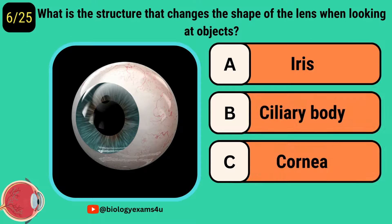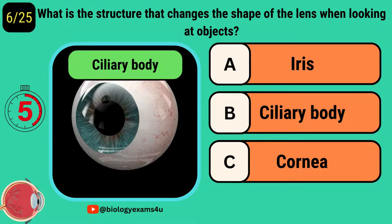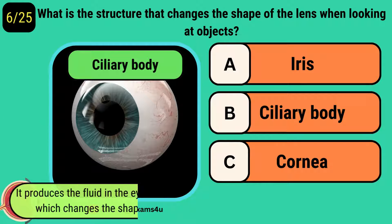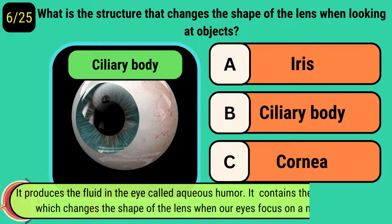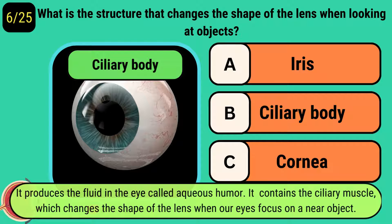What is the structure that changes the shape of the lens when looking at objects? The answer is the ciliary body. It produces the fluid in the eye called aqueous humor. It contains a ciliary muscle which changes the shape of the lens when our eyes focus on a near object.